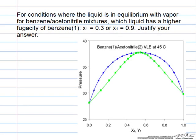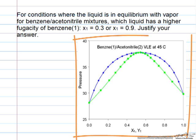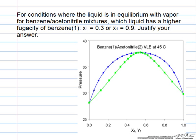In this problem, we have vapor-liquid equilibrium, and we're given a diagram of pressure versus mole fractions, so it's a system with an azeotrope, and it wants us to say something about the fugacity of the liquid.